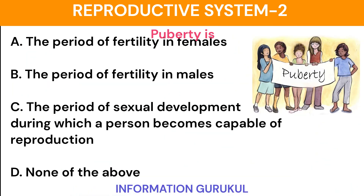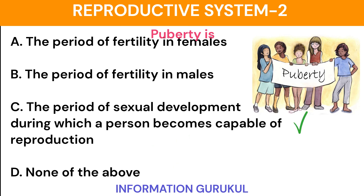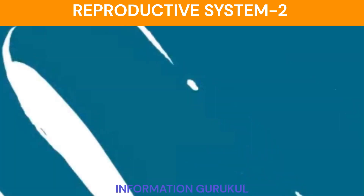Puberty is the period of sexual development during which a person becomes capable of reproduction.